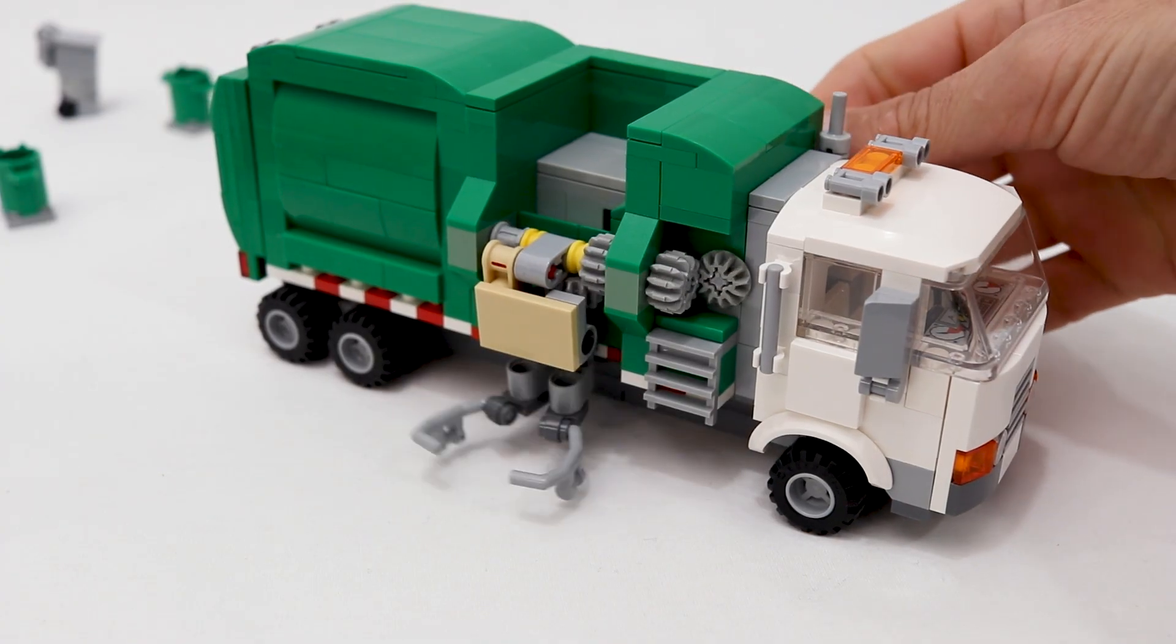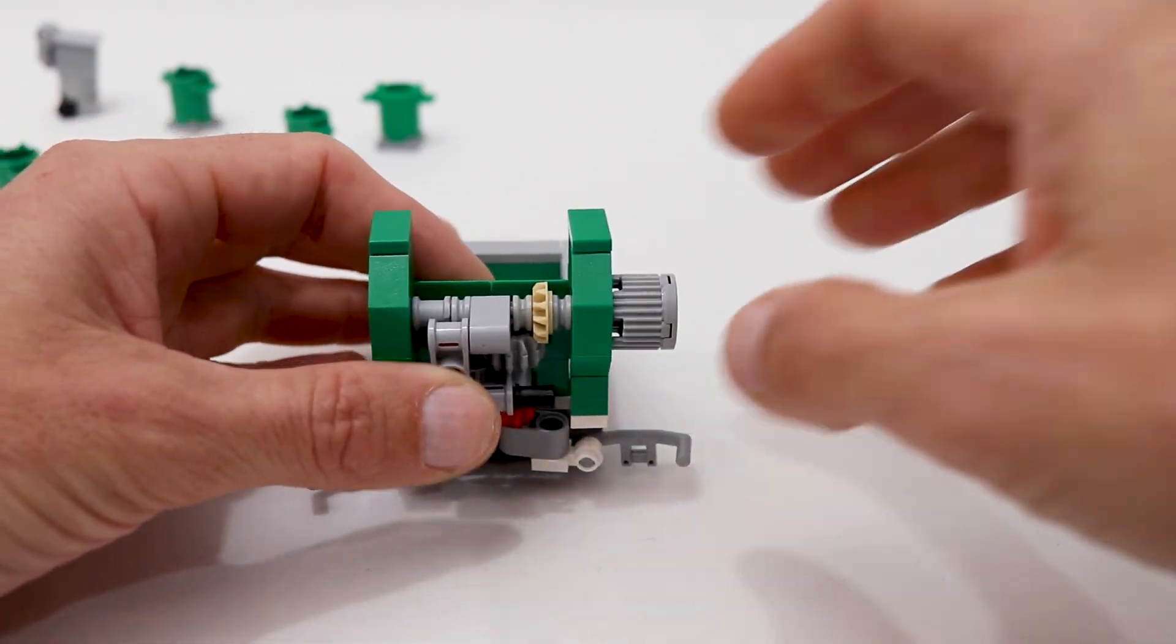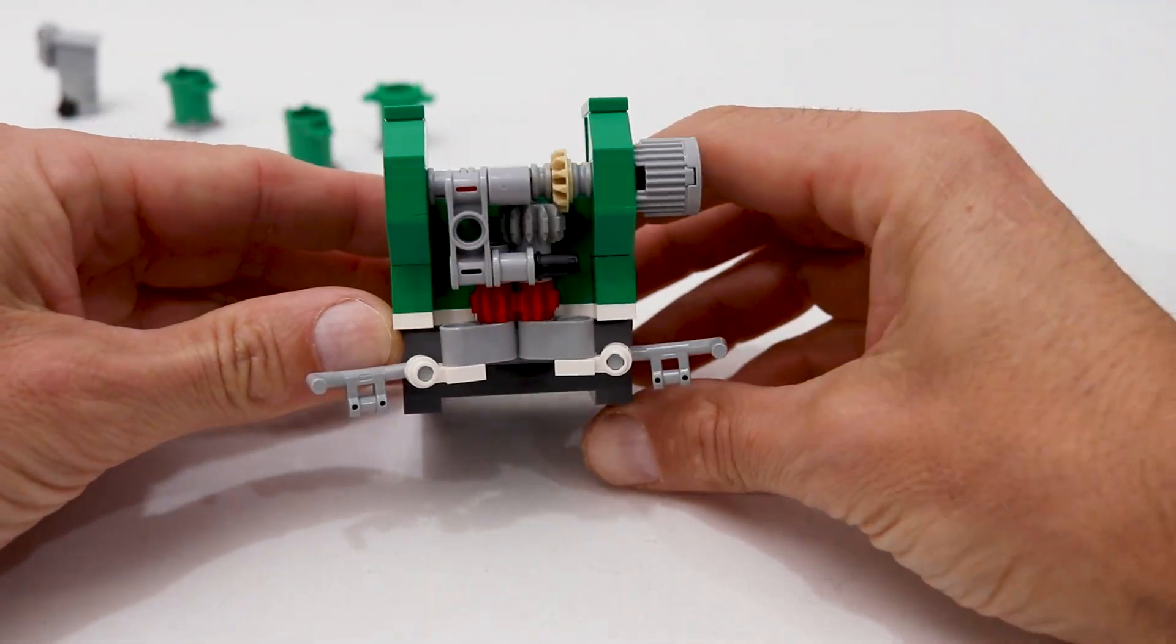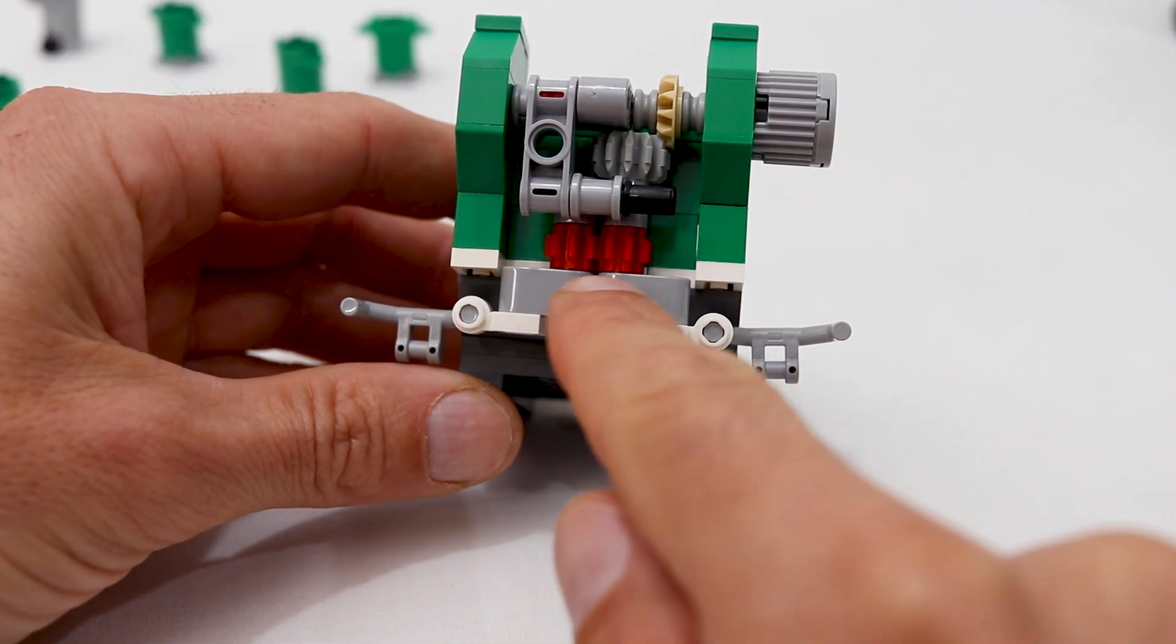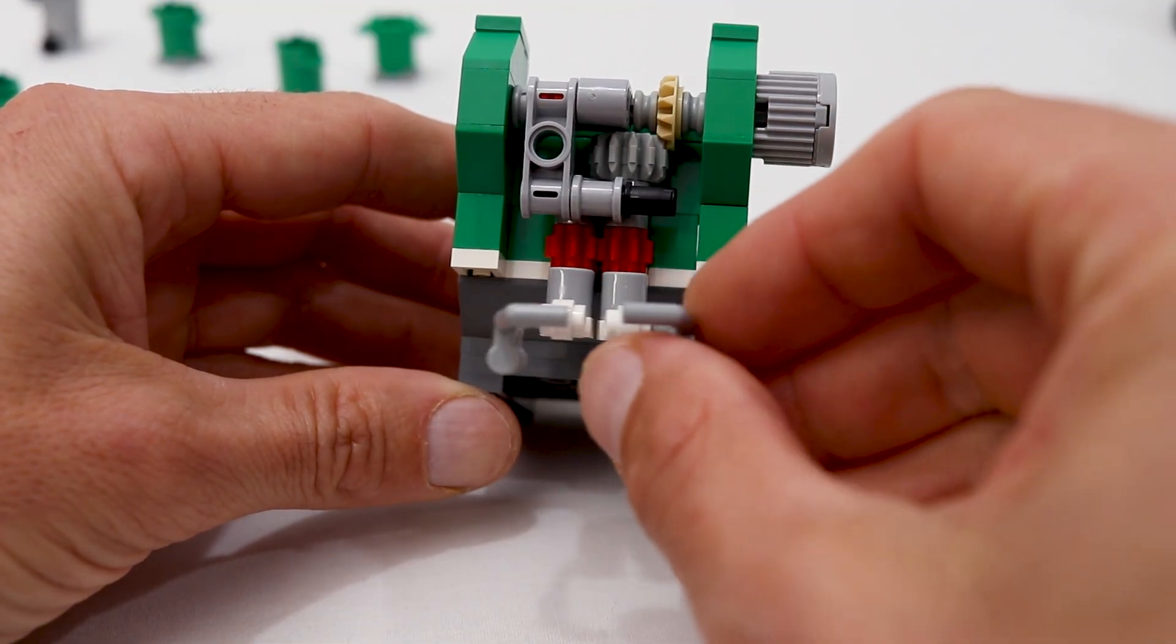So how does this dual action side loader work? I built a standalone model so that we can more easily see what's going on. The gripper arms are mounted at the end of two axles which are meshed together using these eight-tooth gears so that they open and close in tandem.